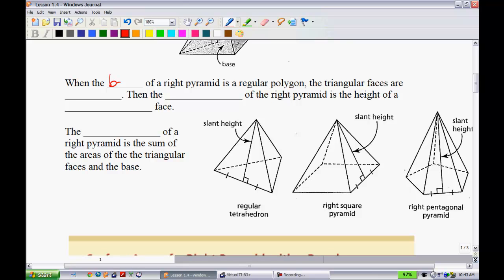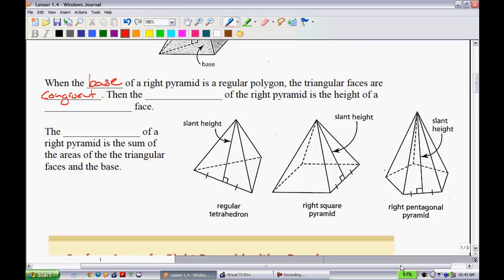When the base of a right pyramid is a regular polygon, the triangular faces are congruent. All of these examples have a shape where all the sides are equal, so we can say that the triangles are equal. Then the slant height of the right pyramid is the height of the triangular face. They've labeled all three of those for you. Slant height is going to be very important in order to calculate the surface area. Lastly, the surface area of a right pyramid is the sum of the areas of the triangular faces and the base.